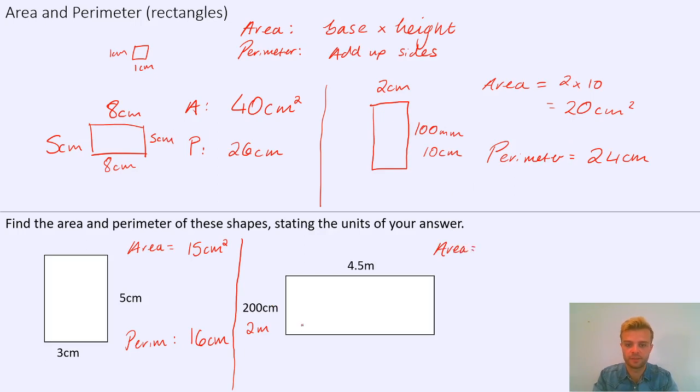And now we can find the area and perimeter. The area is the base times the height, so 4.5 times 2, which is what it is in meters, to get 9 meters squared. And the perimeter is going to be 4.5 plus 2 plus 4.5 plus 2. So 4.5 plus 2 is 6.5, and then plus another 6.5 is 13. So the perimeter is 13 meters.